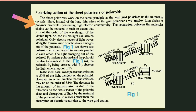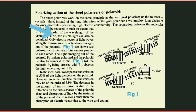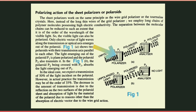The separation between the molecular chains can be reduced to such an extent that it is of the order of the wavelength of visible light — aur ye jo molecular chains ki beech mein separation hai wo wavelength of visible light ke order ka hoga — so the visible light can also be polarized. Only the electric vector of light waves along the transmission or optical axis emerges out of the polarite.